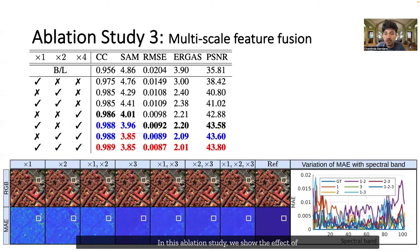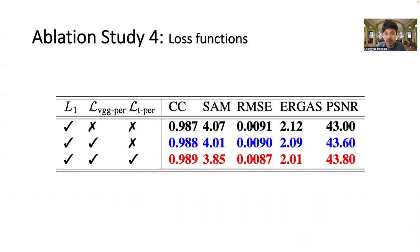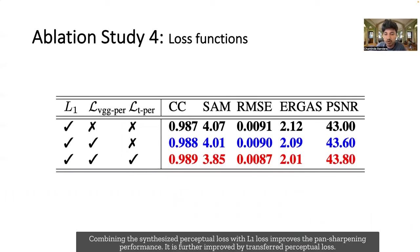In this ablation study, we show the effect of injecting textural features at multiple spatial scales. From the table, we can see that the best pan-sharpening performance is observed when we utilize our hyper-transformer across all three spatial scales. This table shows how each loss function improves the quality of hyperspectral pan-sharpening. Combining the synthesized perceptual loss with L1 loss improves the pan-sharpening performance. It is further improved by transferred perceptual loss.